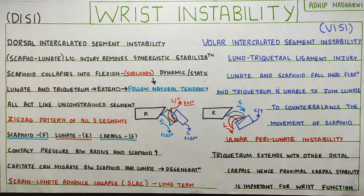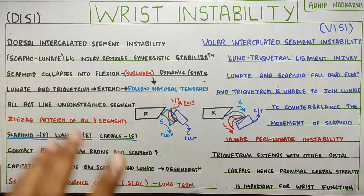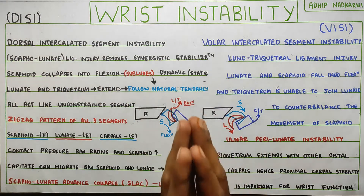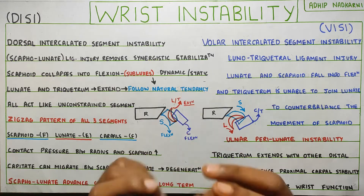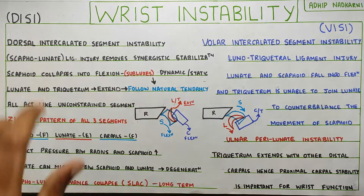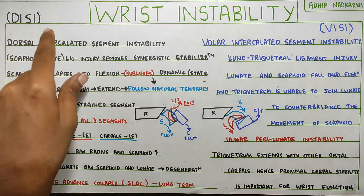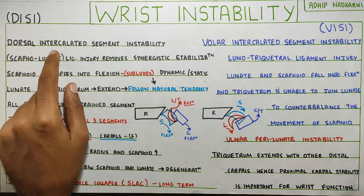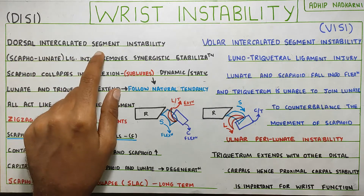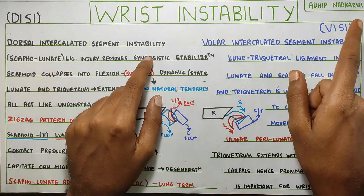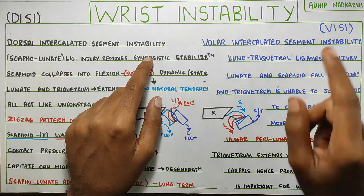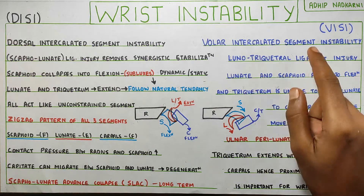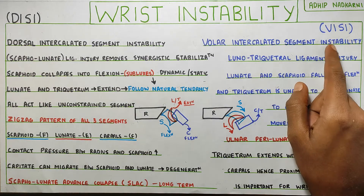In this video, we are going to talk about wrist instability. Under wrist instability, we will be talking about two main topics: DISI, that is dorsal intercalated segment instability, and VISI, that is volar intercalated segment instability.